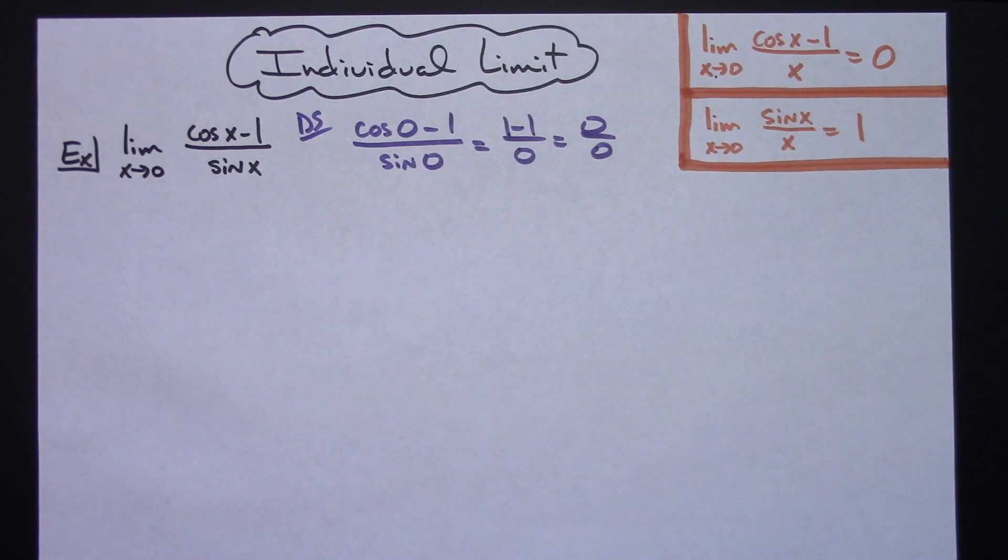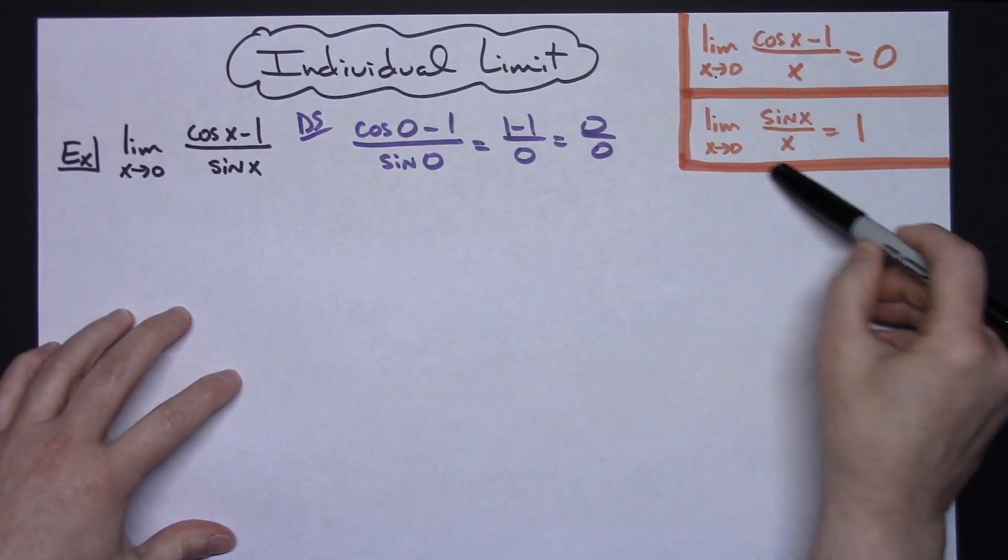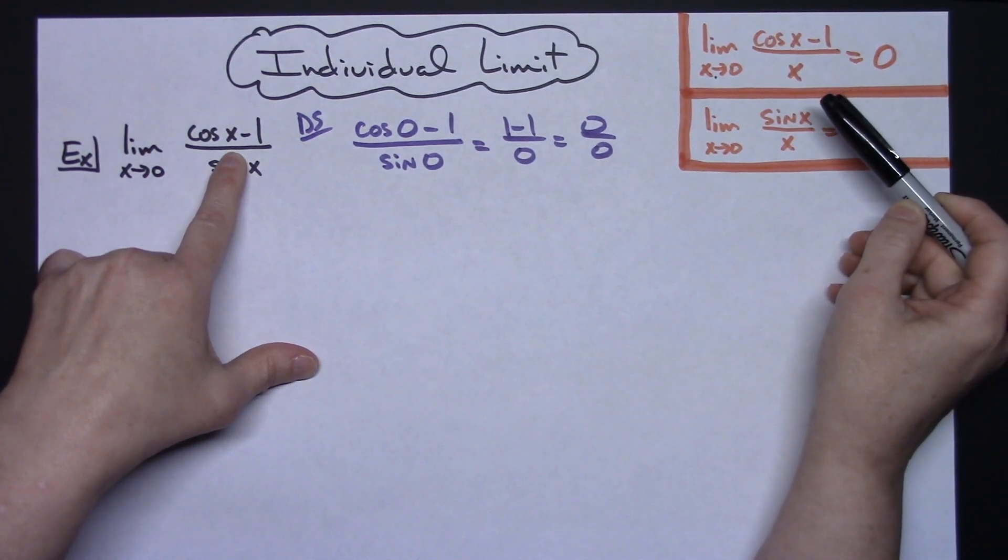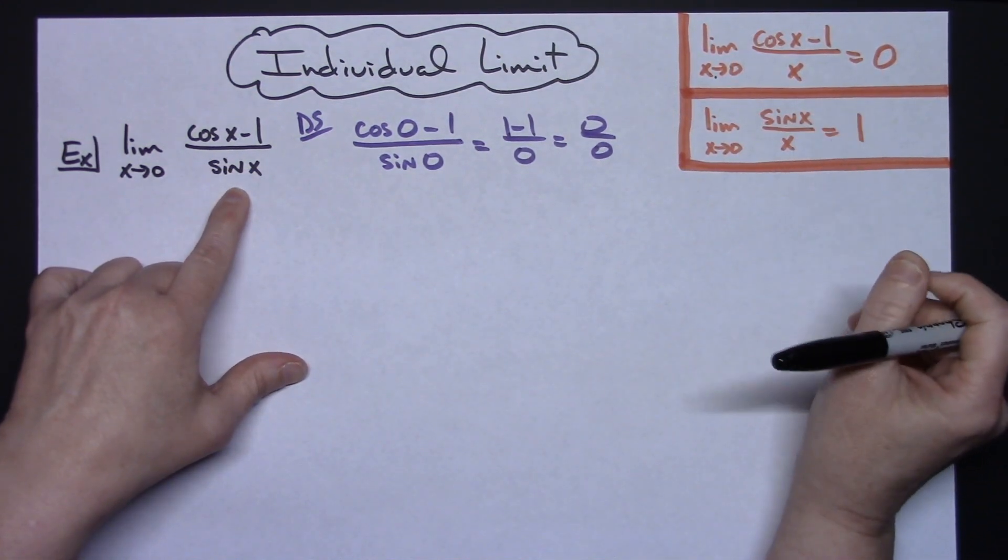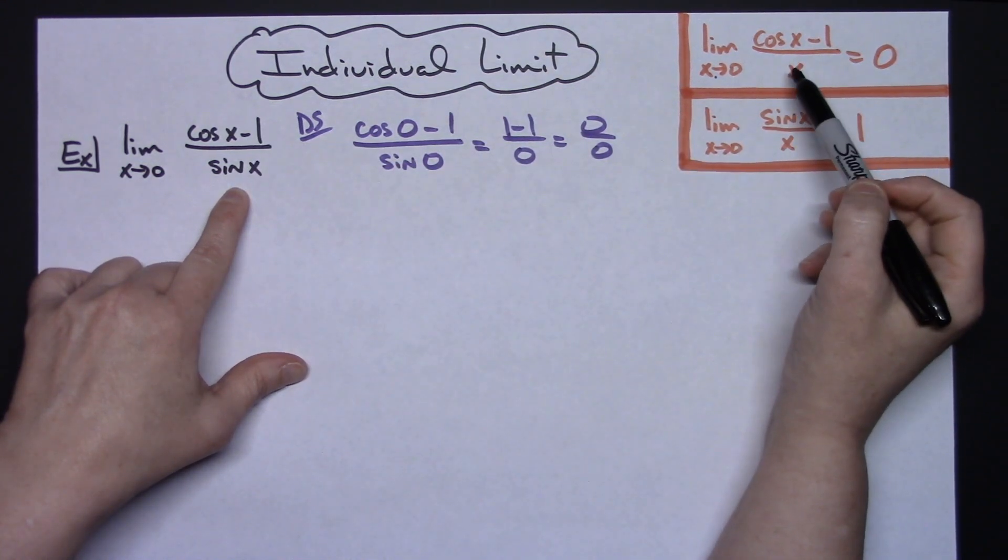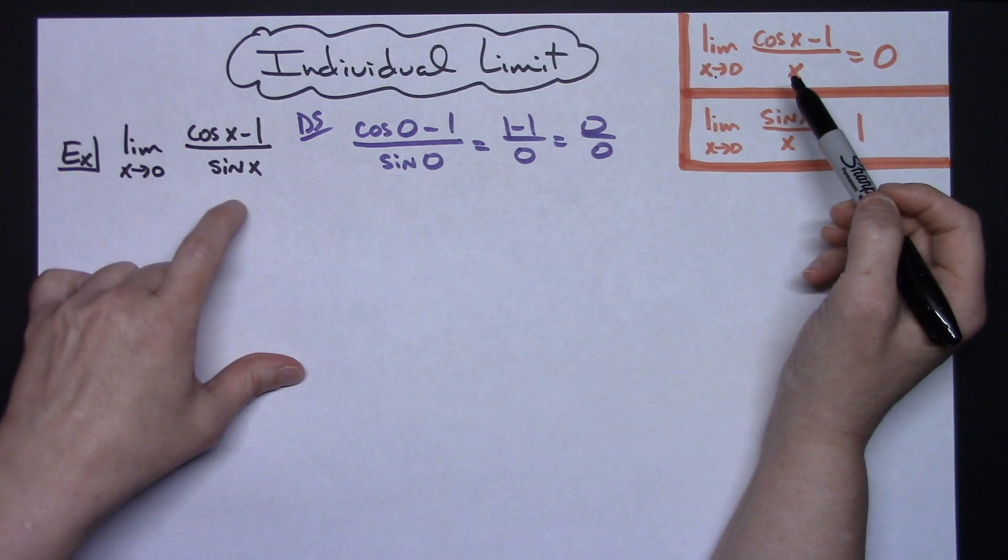Now, knowing these two properties of limits, I can see I've got a cosine X minus 1 and I've got a sine X. So really, the only thing I need for both of these is to have a division by X on both of those.